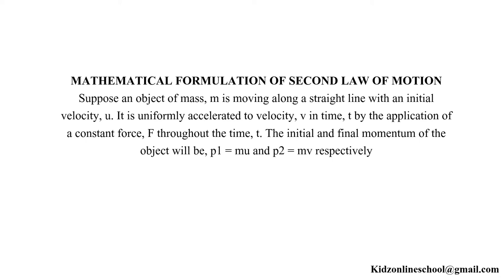Mathematical formulation of the second law of motion. Suppose an object of mass m is moving along a straight line with an initial velocity u. It is uniformly accelerated to velocity v in time t by the application of a constant force f throughout the time. The initial and final momentum of the object will be p1 = mu and p2 = mv, respectively.